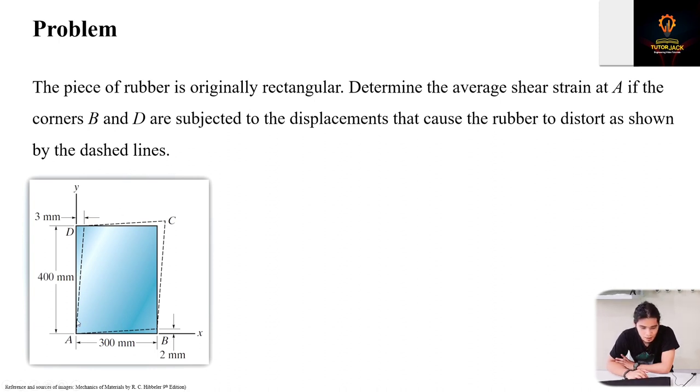Now, the problem states that we only analyze point A. Even though there are movements at sides BC and DC, since the problem specifically asks about point A, we'll analyze the movement at side AD and side AB. These are what we'll compute for average shear strain.